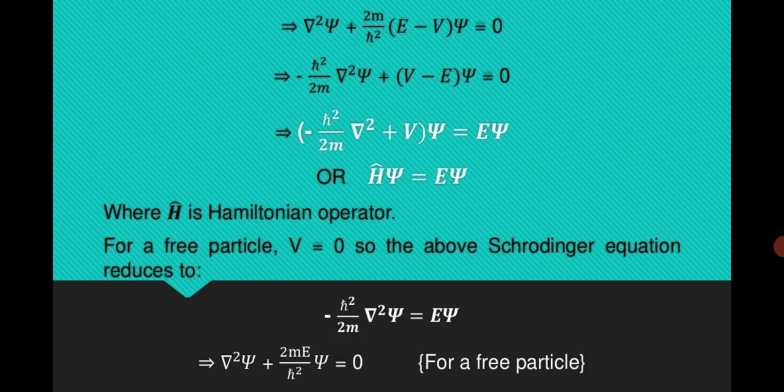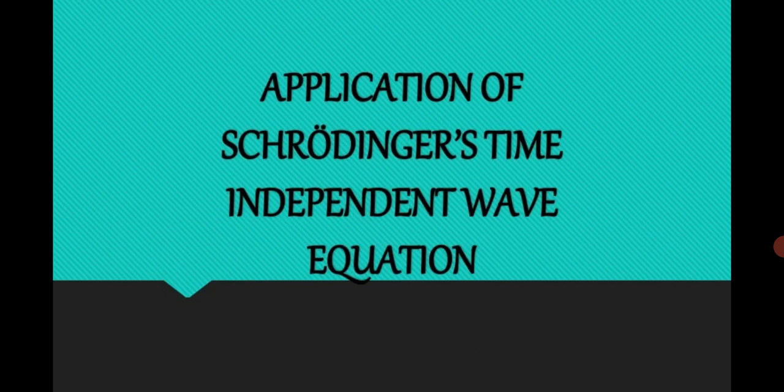Here H is the Hamiltonian operator. If we write −(ℏ²/2m)∇² + V = H, then Hψ = Eψ. For a free particle where V = 0, the Schrödinger equation reduces to: Eψ = −(ℏ²/2m)∇²ψ.